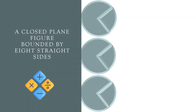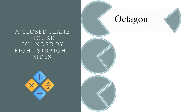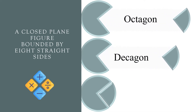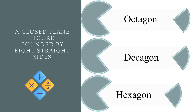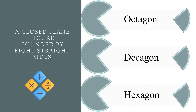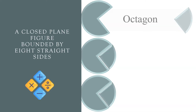A closed plane figure bounded by eight straight sides. Octagon, decagon, or hexagon? The correct answer is octagon.